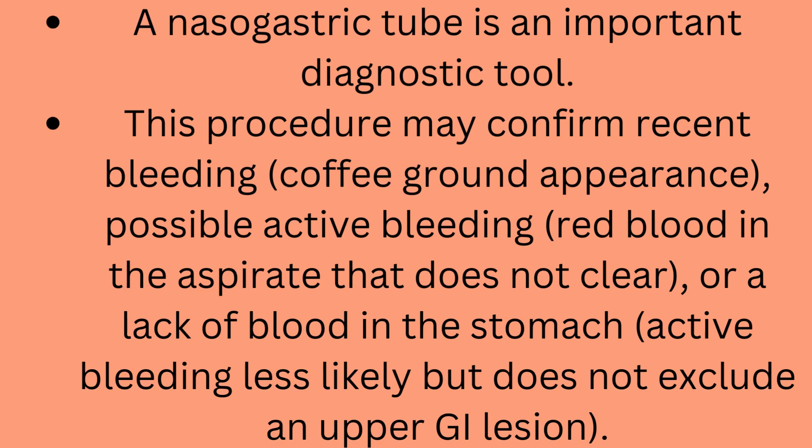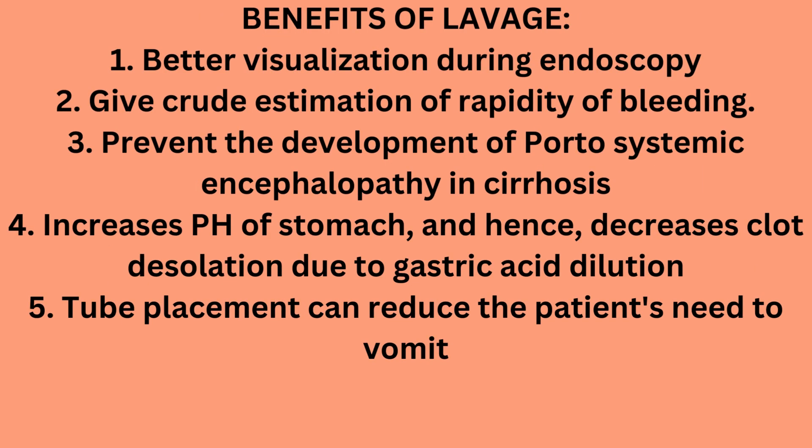A nasogastric tube is an important diagnostic tool. This procedure may confirm recent bleeding (coffee ground appearance), possible active bleeding (red blood in the aspirate that does not clear), or a lack of blood in the stomach making active bleeding less likely, but does not exclude an upper GI lesion. Benefits of lavage include: better visualization during endoscopy, a crude estimation of the rapidity of bleeding, and prevention of portosystemic encephalopathy and cirrhosis.